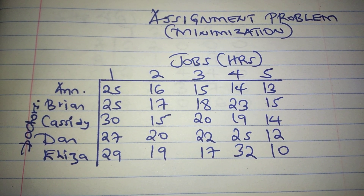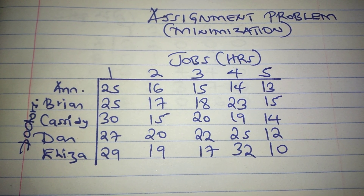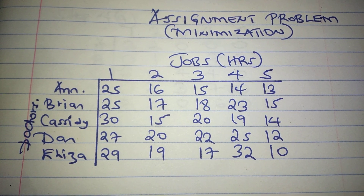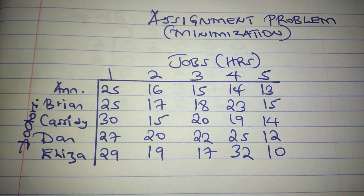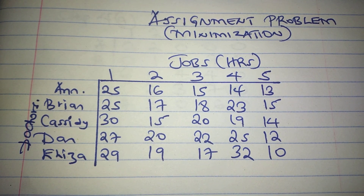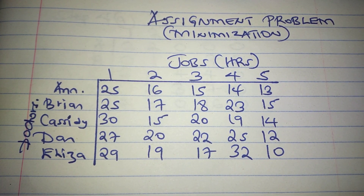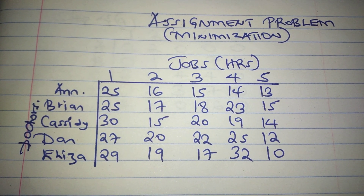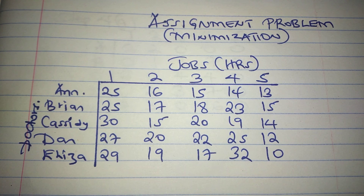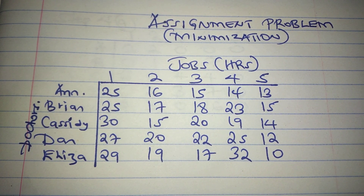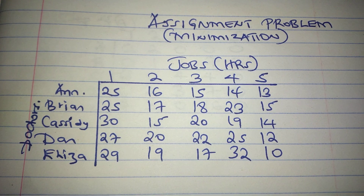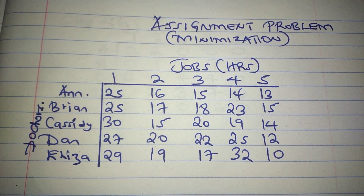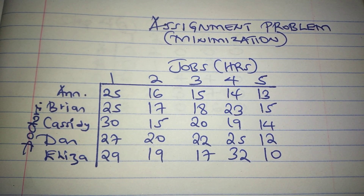Before we get into the actual solution, it is important to understand what assignment is. The assignment method is a special form of the transportation method, designed for problems in which an equal number of sources and destinations must be paired off in an optimal manner. That is, the number of rows must equal the number of columns. The goal is to find an optimal assignment of agents to tasks without assigning an agent more than once, and ensuring that all tasks are completed.